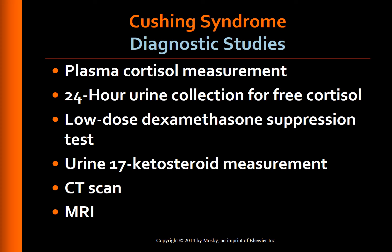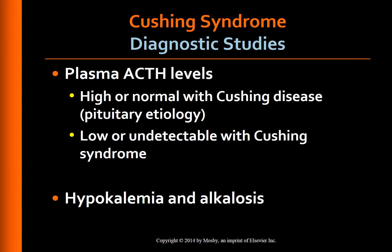CT scan and MRI of the pituitary and adrenal glands may also be done. Plasma ACTH levels may be low, normal, or elevated depending on the underlying cause of Cushing syndrome. High or normal ACTH levels indicate Cushing's disease of a pituitary etiology, whereas low or undetectable levels indicate Cushing's syndrome of an adrenal or medication etiology. Hypokalemia and alkalosis are seen in ectopic ACTH syndrome and adrenal carcinoma.